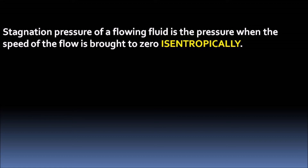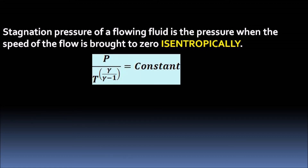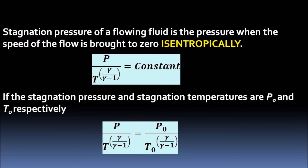The isentropic relationship between pressure and temperature is given as P / T^(γ/(γ−1)) = constant. Taking the stagnation pressure and stagnation temperature as P₀ and T₀ respectively, while the static pressure and temperature are P and T respectively, the relationship between static and stagnation quantities can be written.